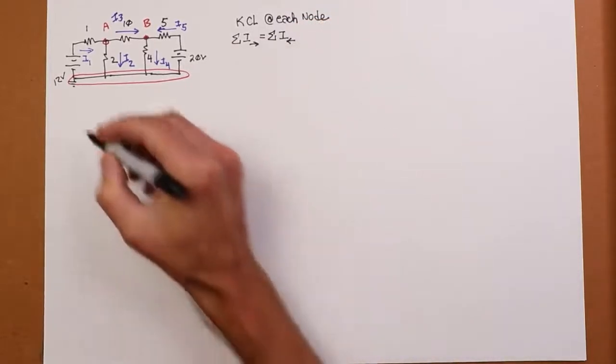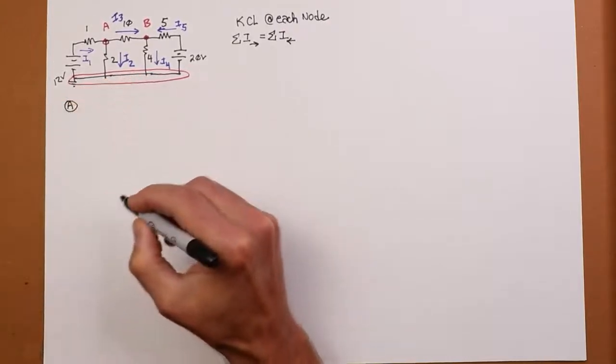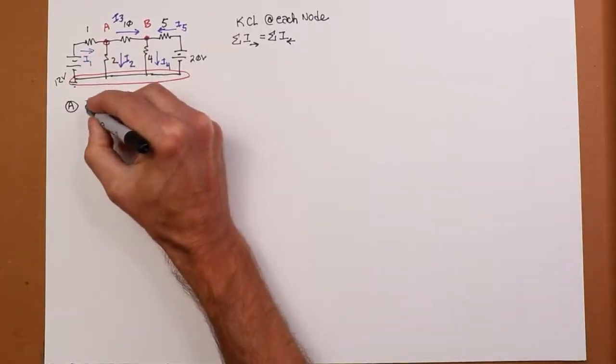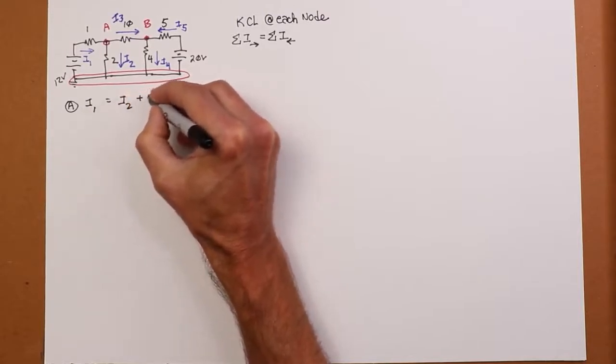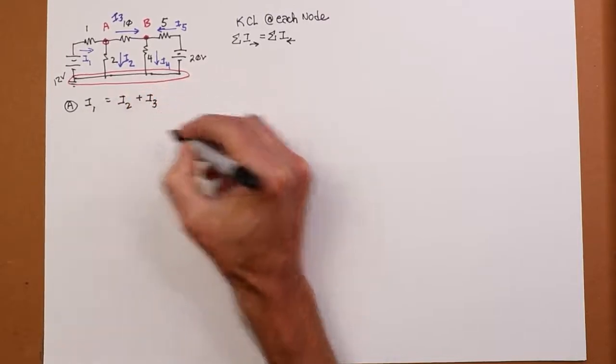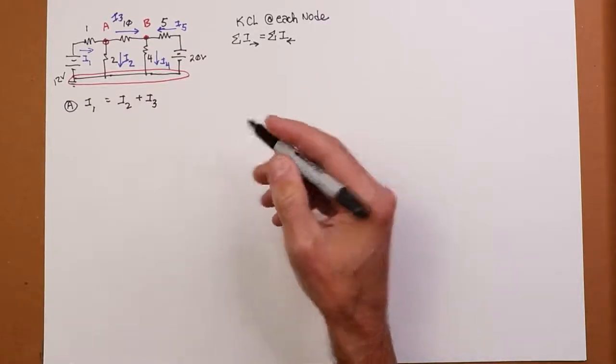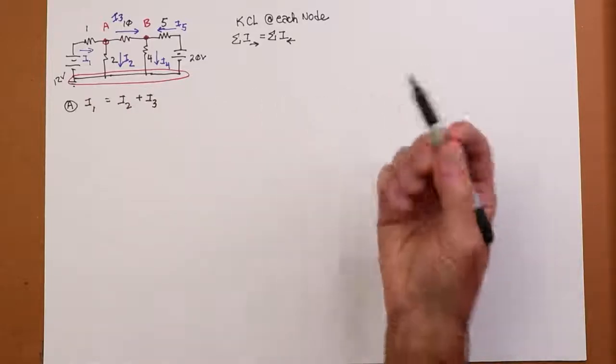And then, just finishing off here, we'll say I4 is flowing down this way. And, just to be different, I'm going to say the current flowing through the 5 is going this way. And we'll call that I5. So at each of these nodes, we write a KCL summation. Remember KCL is the summation of the currents going into the nodes. It has to equal the summation of the currents leaving those nodes. What goes in must come out. So, for node A, what we wind up with is I1's coming in, I2 and I3 are going out.